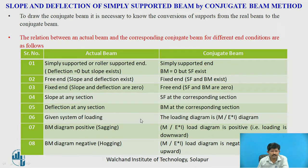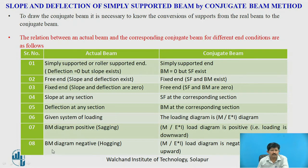For a given system of loading, the load diagram for the conjugate beam is the M upon EI diagram. If the bending moment is positive — that is, sagging — in the real beam, the M upon EI diagram acts downward. If the bending moment is negative — that is, hogging — in the real beam, then the M upon EI loading diagram acts upward.